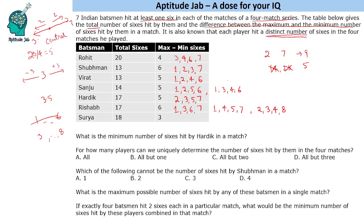For Surya, this is easy because the difference is just three. The average is about four-point-five, so one-and-a-half each side gives three to six. The values are simply three, four, five, six.